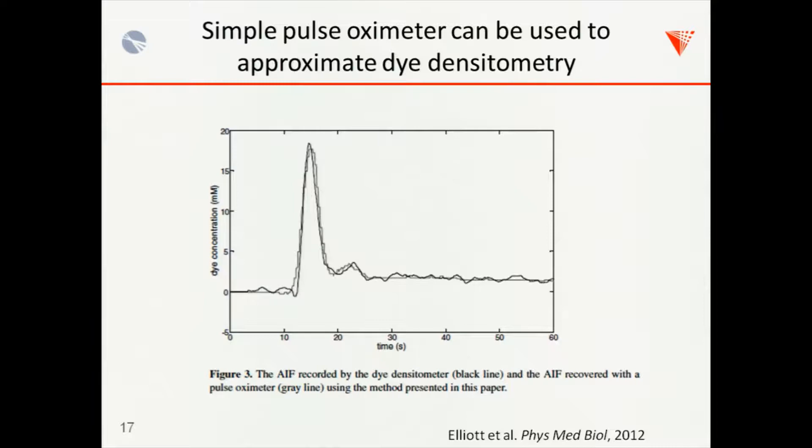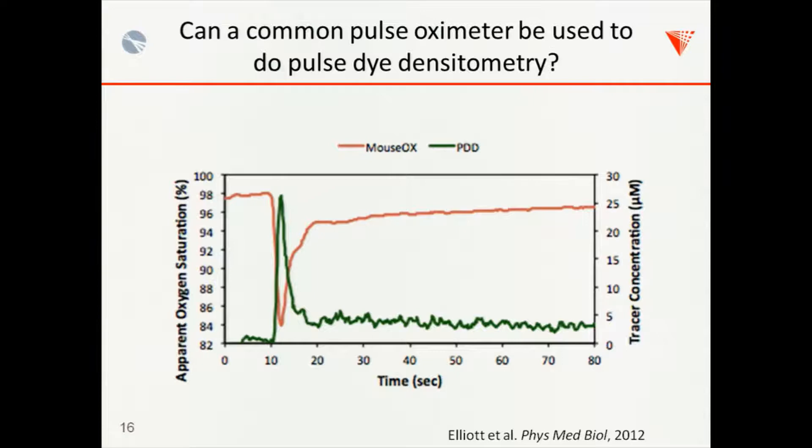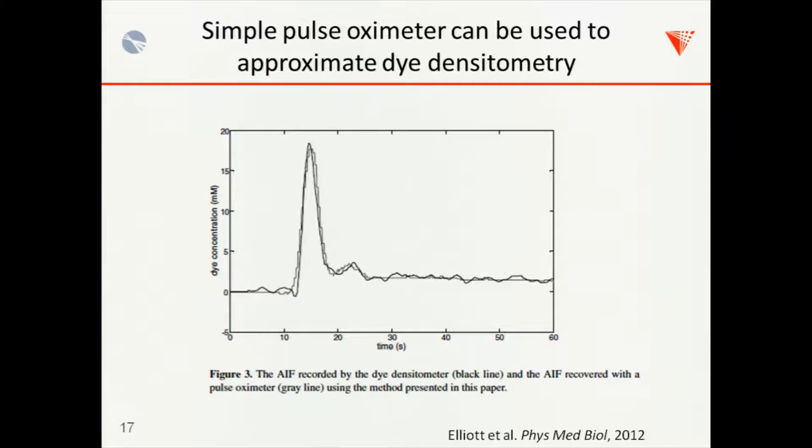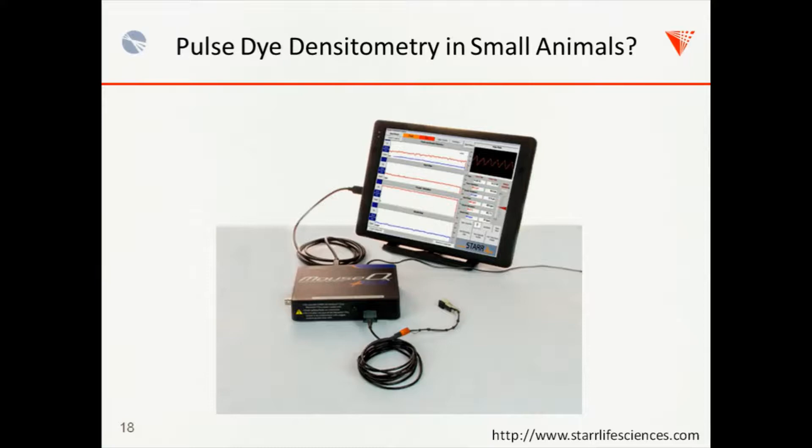So this was done in a larger animal. You can do this. There are a few options for doing pulse oximetry in mice now. So we tested this out in mice. You get some discretization problems, but you can compare it to a regular pulse dye densitometer. And this approach seems to work quite well. So this is just an example of one of the mouse pulse oximeters that are out there. Obviously with 10 Hertz heart rate in mice or 600 beats per minute, it's very difficult to do this in mice, so you need specialized hardware.